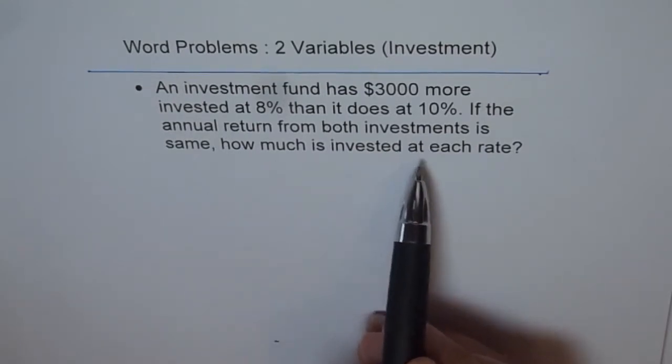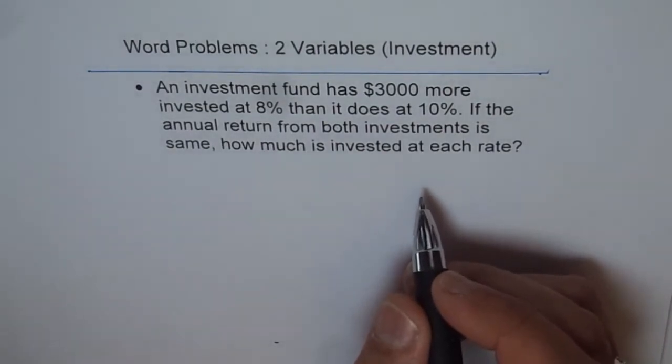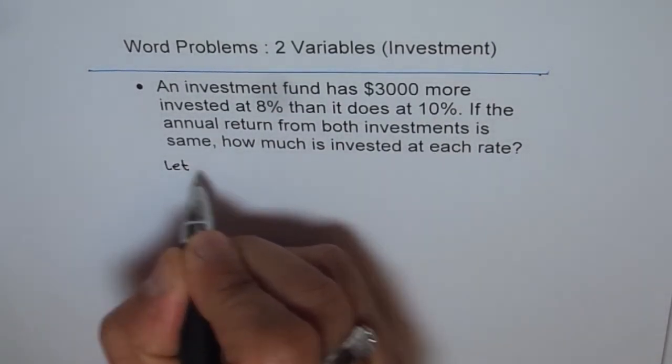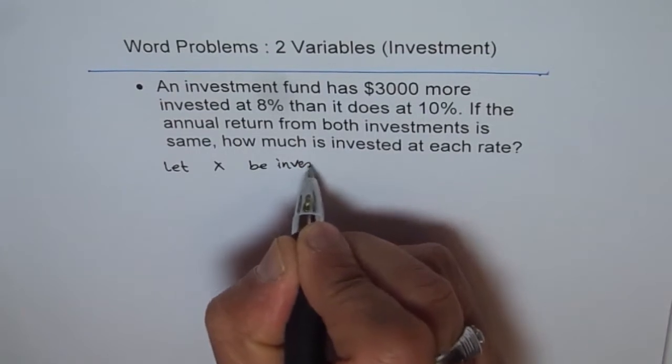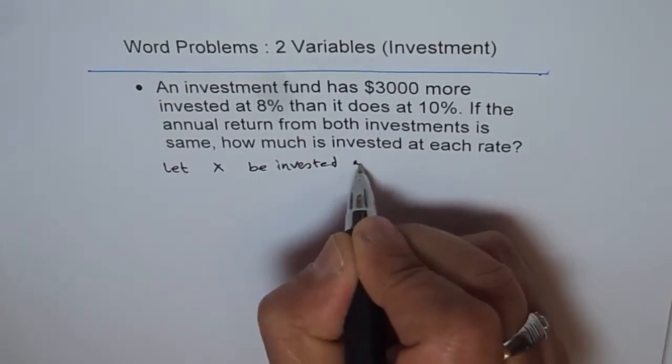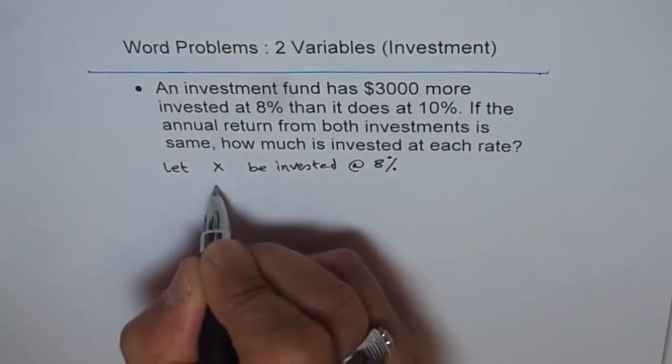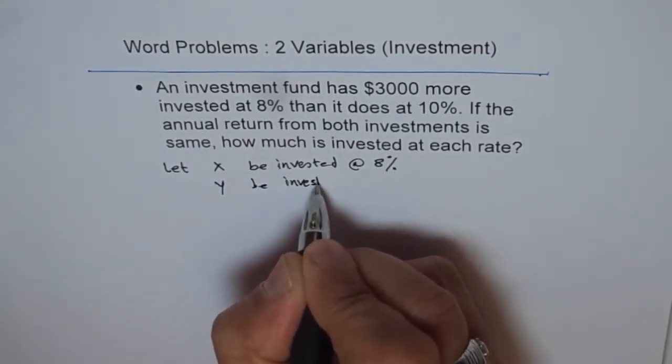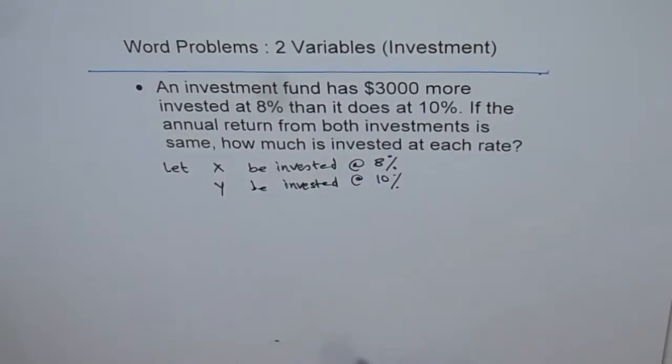If the annual return from both investments is the same, how much is invested at each rate? So let us assume that amounts X and Y are invested at each rate.